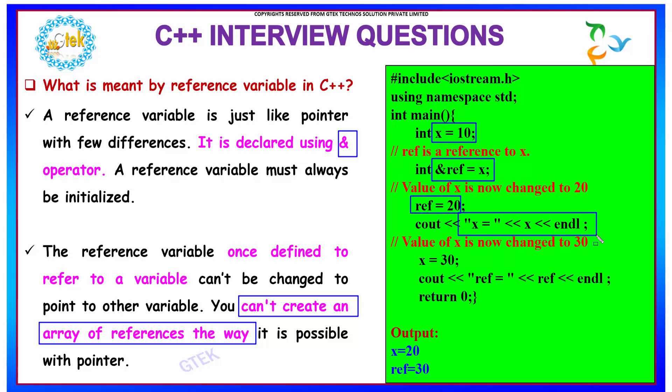So if I see my output here, the value of x will be 20. And further if I change the value of x, that will reflect in your reference as well. So your reference variable on printing at this point will give you 30.